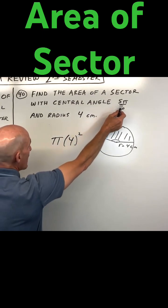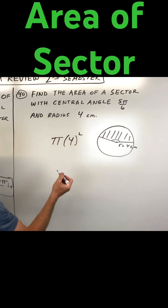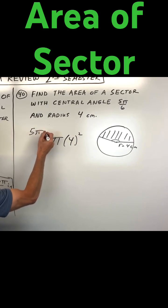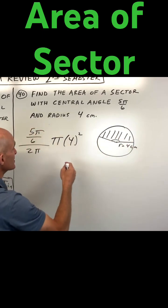But what we want is the fraction of the whole circle. So this is going to be 5 pi over 6 divided by 2 pi, which is 360 degrees.